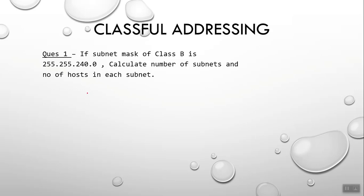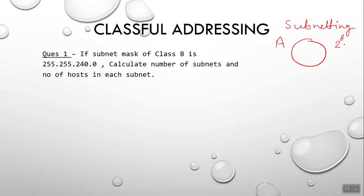In this question we will see classical addressing and specifically subnetting. What is subnetting? Suppose this is a Class A network — there are 2 raised to power 8 possible network IDs and the hosts. We basically divide this into many parts, and this is called subnetting.